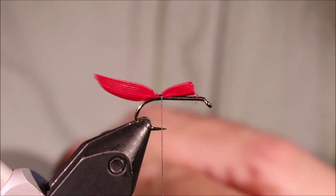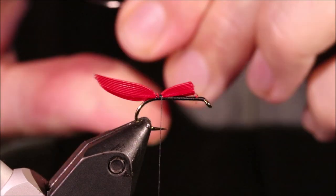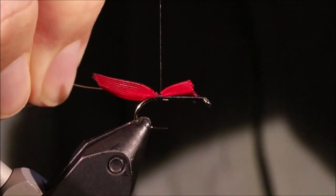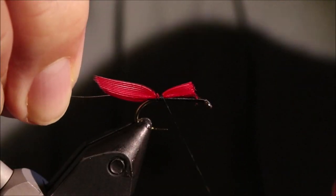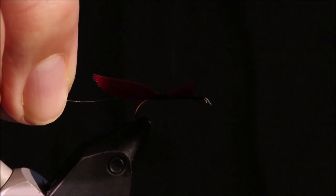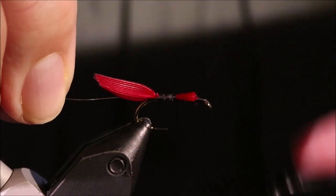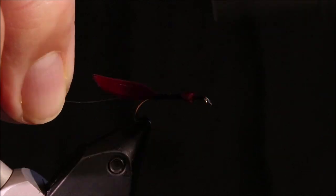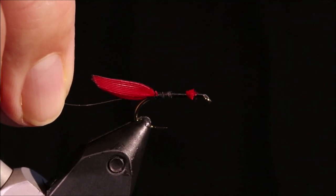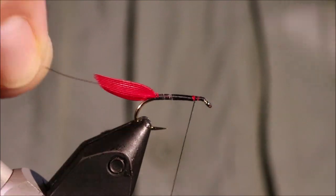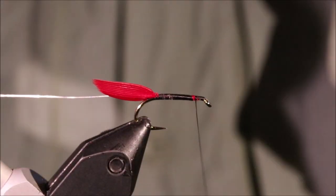The length of the body, and I'll grab my rib, which is some fine silver wire. I'll tie that on my side with the waste again the length of the body, and then I'll just tidy everything up, create a nice smooth underbody.